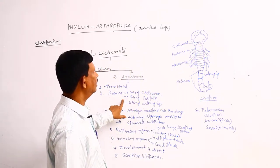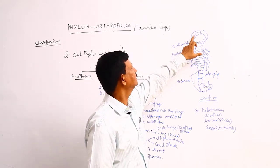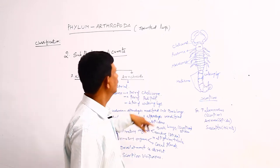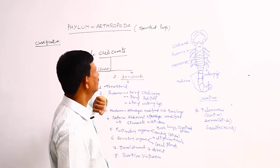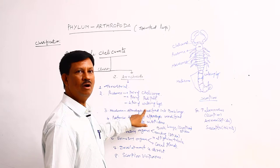Next, a pair of pedipalps are also present at the anterior region. They are well developed here. And four pairs of walking legs are present here. With the help of that, the animal can move on land.